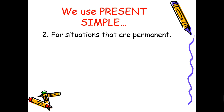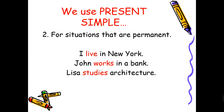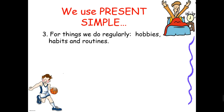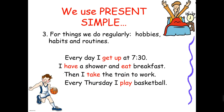The second usage is for permanent situations — things that are the same all the time. Like 'I live in New York' or 'John works in a bank' — his job, what he does. 'Lisa studies architecture' — these are all permanent and don't change all the time. The third usage is for things we do regularly — hobbies, habits, and routines. For example: 'Every day I get up at 7:30, have a shower and eat breakfast, then take the train to work. Every Thursday I play basketball.' All these are things done regularly and repeatedly.